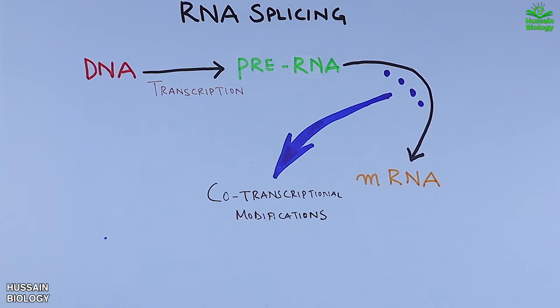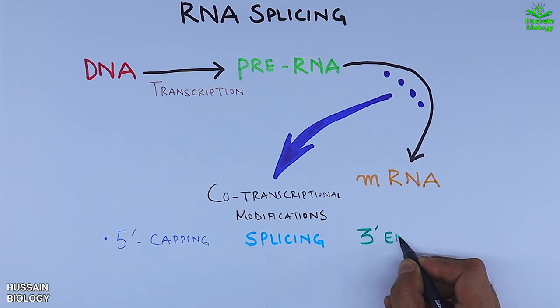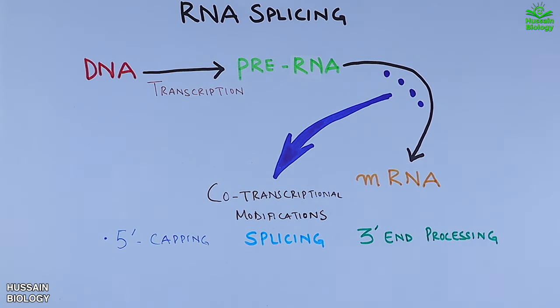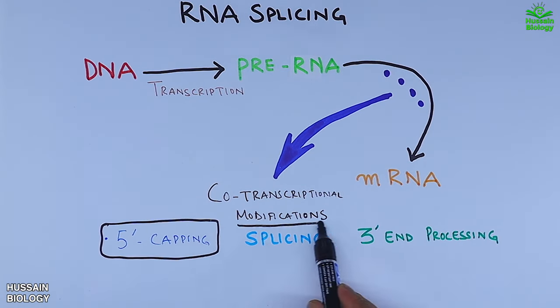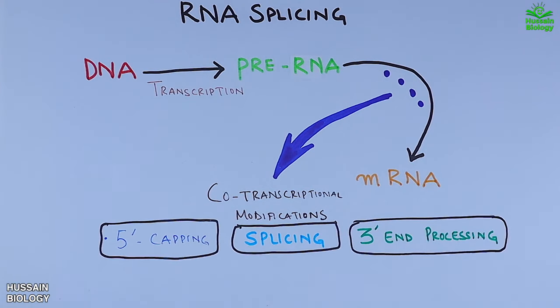First is the 5 prime capping, second is the splicing or RNA splicing, and third is 3 prime end processing. Here we are more concerned with RNA splicing. Before getting to the RNA splicing process in detail, let's have a look at requirements for RNA splicing.